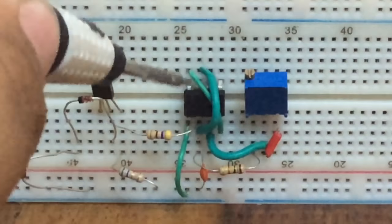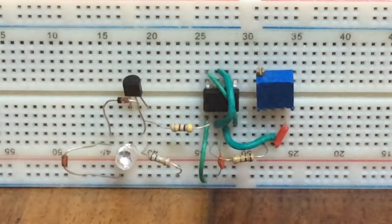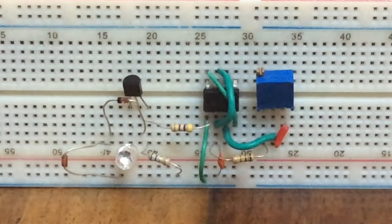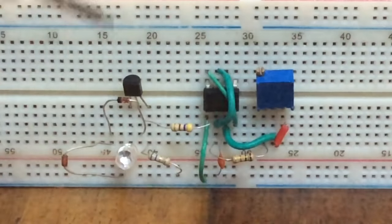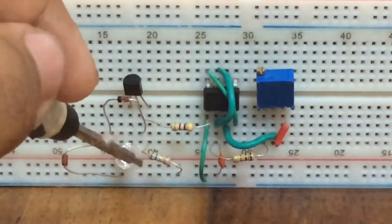Now finally, place the IR LED on the breadboard with its cathode (shorter leg) connected to the emitter of the transistor and its anode (longer leg) connected to the positive rail of the breadboard.